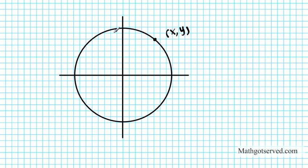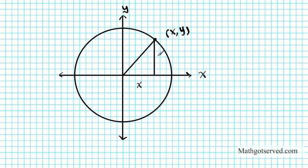I'm going to create a right triangle and use right triangle trigonometry to generate the formulas. We generate the right triangle using the point we created — drawing a line from the center to the point and then a right triangle downward. Since this point is (x, y), the base length of the triangle is x and the vertical length is y.